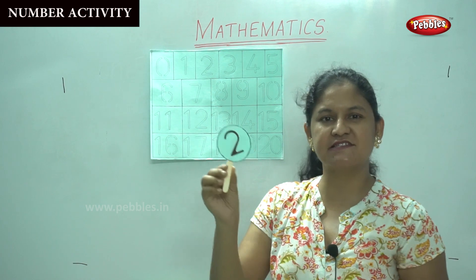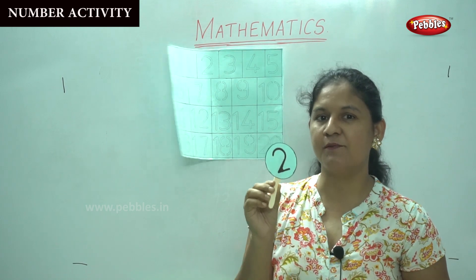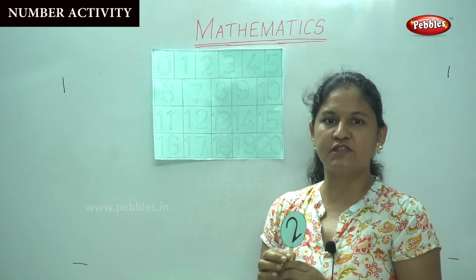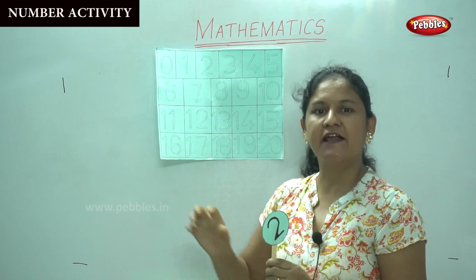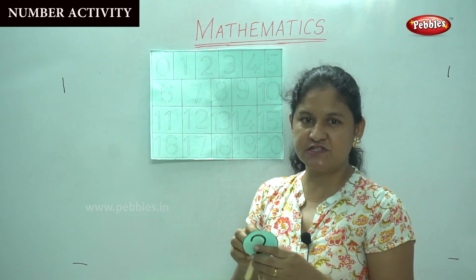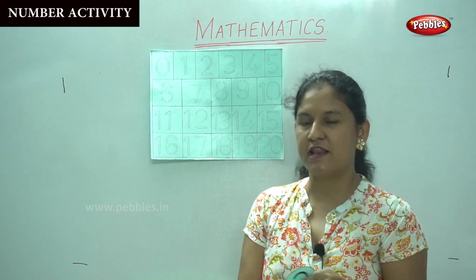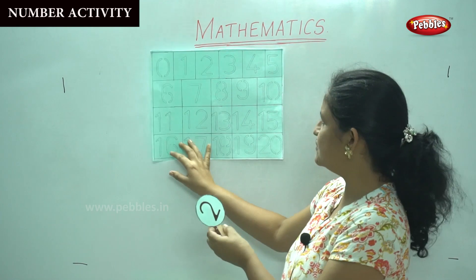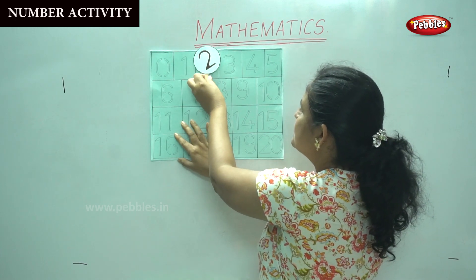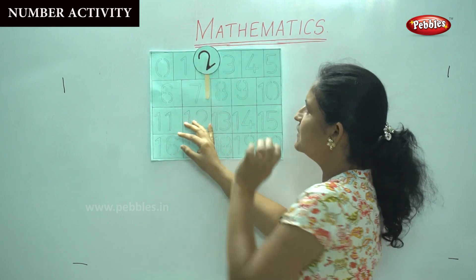So what number is this? Yes, it is number 2. So I'm going to see where number 2 is on the chart and I'm going to stick it on the chart. So are you ready to do it along with me? Yes, so number 2 — where is number 2? I'm placing number 2.